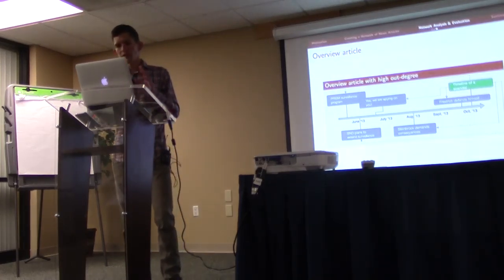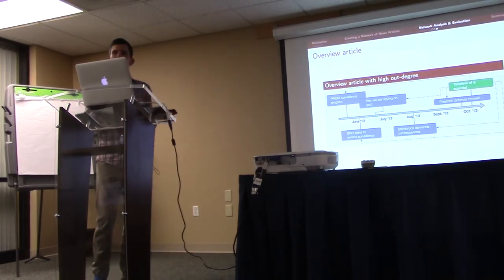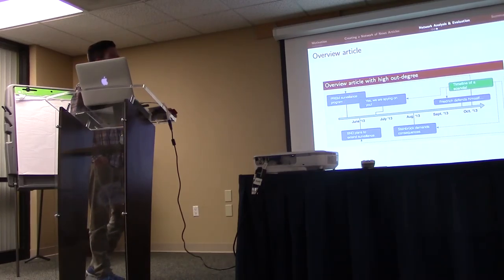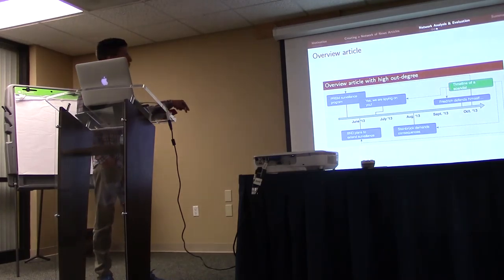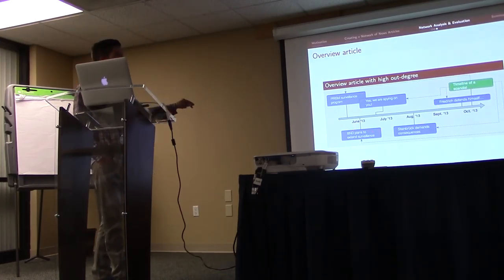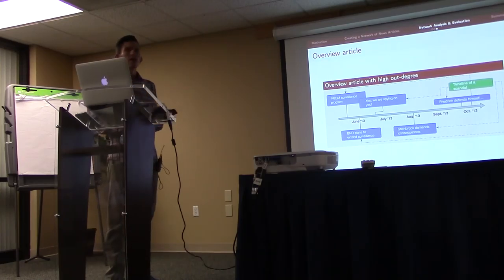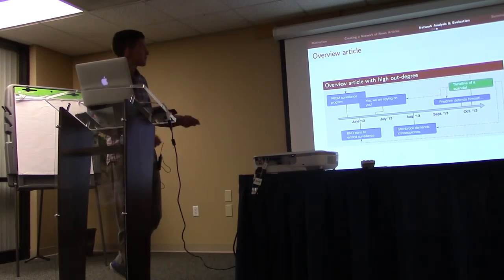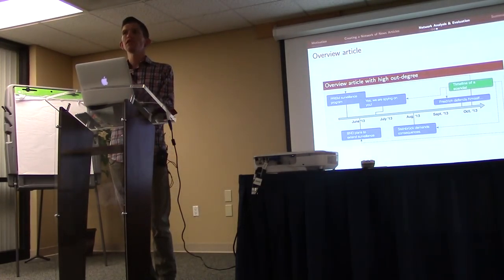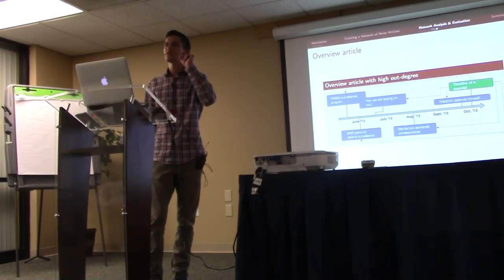I want to show you whether this tool can actually be used as a news exploration tool. Here you can see one overview article titled 'Timeline of a Scandal.' If you're reading this article, the following timeline is proposed to you — it goes back to the beginning of the scandal and covers all the different stages. This is the advantage you get when you perform temporal linking instead of just linking by document similarity, because this article actually consists of many different aspects of a complex storyline.